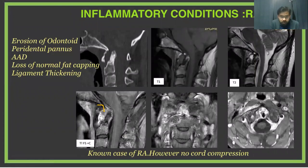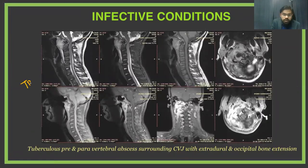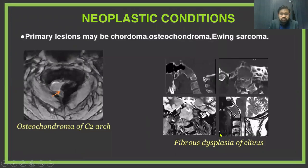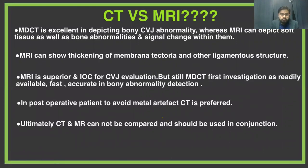This is an inflammatory condition — two patients had rheumatoid arthritis. You can see pannus formation which is enhancing on contrast study, and there is erosion of the dens vertebra as well. Coming to infective conditions, only one patient was present — this is tuberculosis showing pre- and paravertebral abscess which is enhancing, with occipital bone extension. This is a neoplastic condition, not common in our study; this is an example of osteochondroma of the C2 arch. This shows rotatory atlanto-axial subluxation on 3D CT imaging, with asymmetry between the dens and the lateral masses of the atlas. In conclusion, both CT and MRI should be used in conjunction, as CT provides better bony architecture while MRI provides better soft tissue detail.